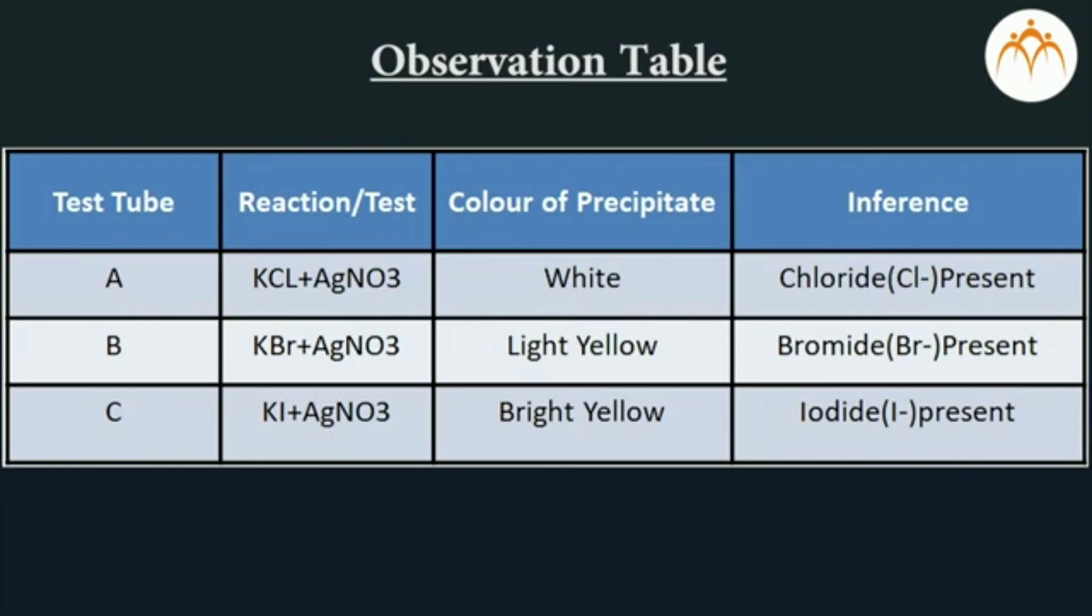All these elements are from one group. Why? Because when they react with silver nitrate, they form precipitate. Though they are of different colors, precipitation is an indicator of 17th group elements.